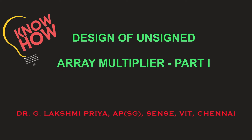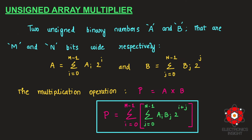Welcome to the next session on the Know-How series. This video is about the design of an unsigned array multiplier. In the first part we'll see the basic steps involved in a multiplication operation and how we arrive at the hardware part of the array multiplier. In the second part we'll cover propagation delay and hardware complexity. Generally, all multiplications are expensive and slow operations, with performance dominated by execution speed.